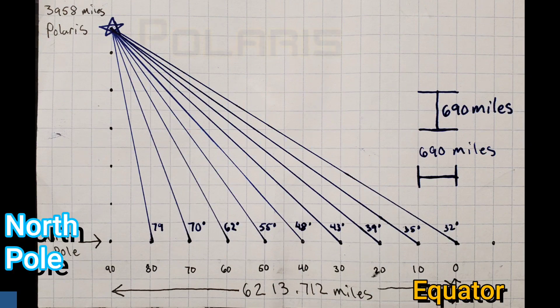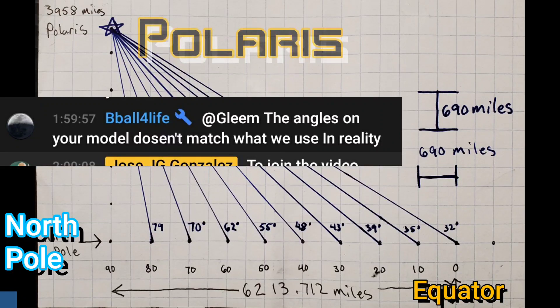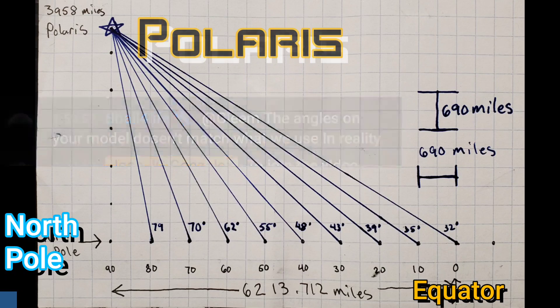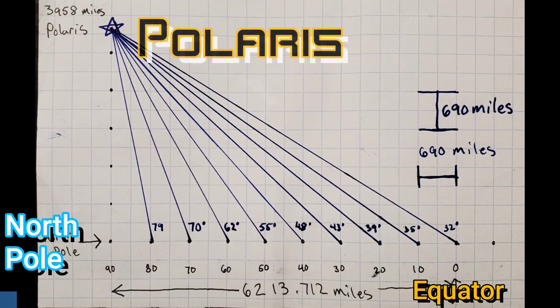I'm sorry Gleam, but your calculations for the distance to Polaris and latitude angles are wildly inaccurate. As you can see in this rough diagram, which is drawn to scale using your calculated distance to Polaris, it makes it impossible for any of these latitude lines to be accurate on a flat earth. The equator would have to have a value of 32 degrees.